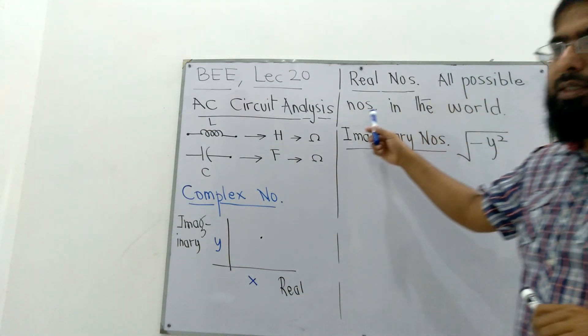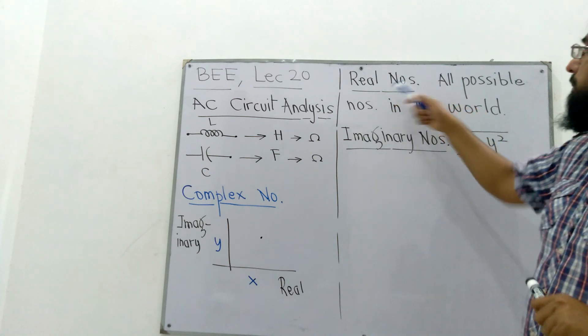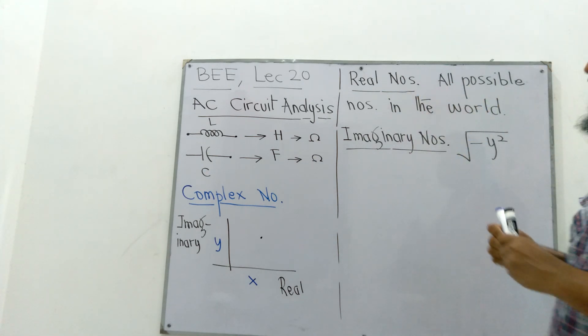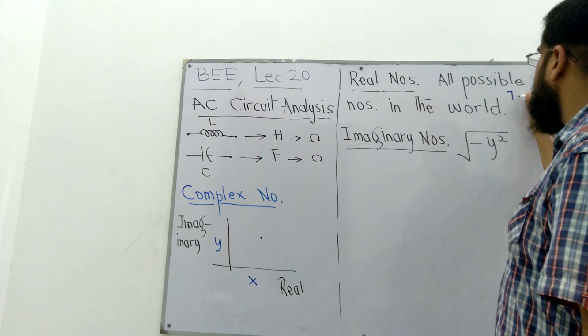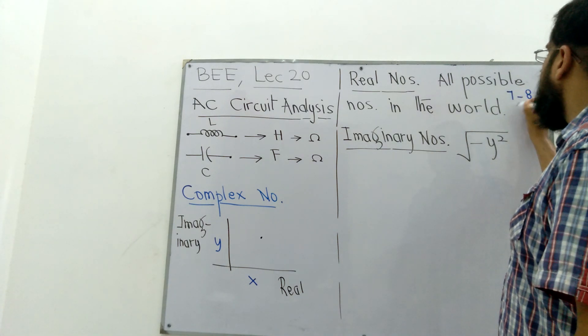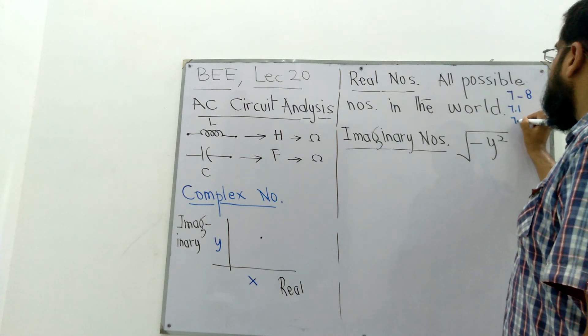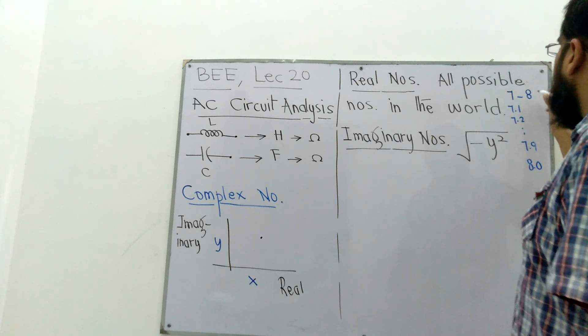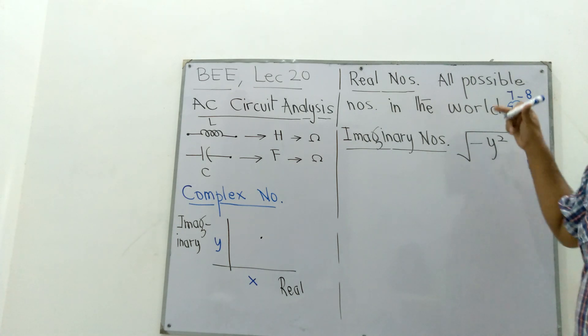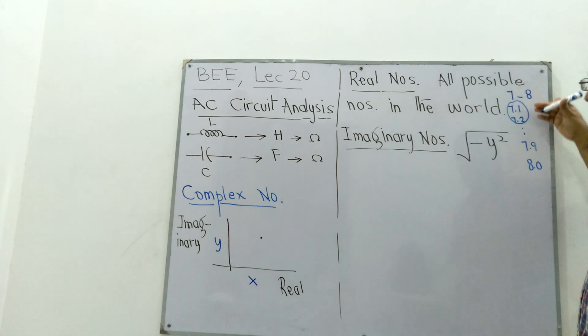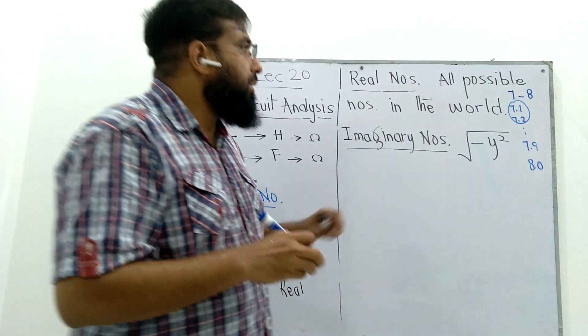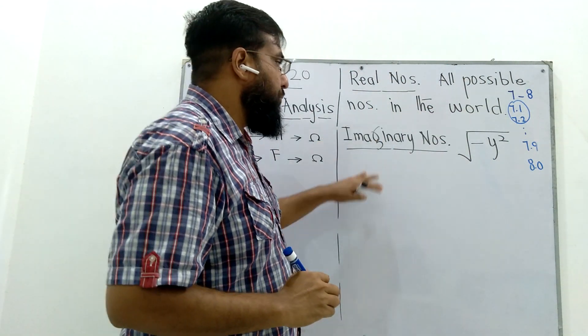A real number set contains all possible numbers in the world. Between any two numbers, there are infinite numbers. Between 7 and 8 we have 7.1, 7.2, 7.9 and then 8. Between 7.1 and 7.2 we have 7.01, 7.02. So between any two real numbers, there are infinite numbers. It contains all possible numbers in this world.